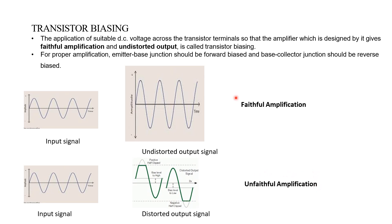When we are fabricating an amplifier with the help of a transistor, the main purpose should be faithful amplification. It means the amplifier should increase the amplitude of the signal applied at the input, but the form and type of the signal will remain the same. The main aim is to get faithful amplification.